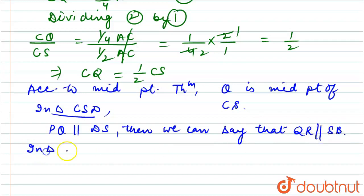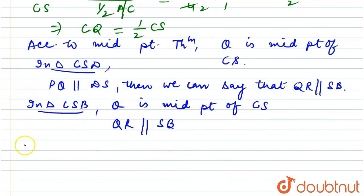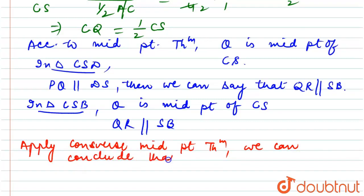Now the second triangle is CSB, in which Q is the midpoint of CS. We have already proved this. So QR is parallel to SB. Applying the converse of the midpoint theorem, we can conclude that R is the midpoint of BC, which is what we needed to prove.